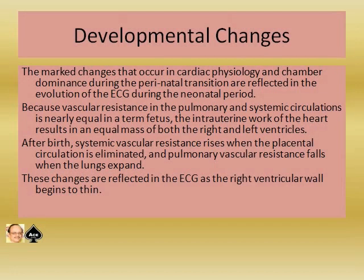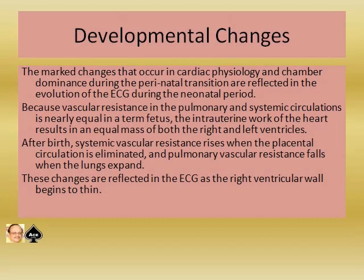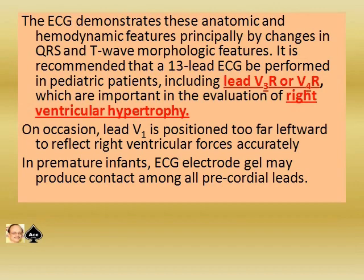Now let us come to the pediatric ECG proper — developmental changes in ECG. The marked changes that occur in cardiac physiology and chamber dominance during the perinatal transition are reflected in the evolution of the ECG during the neonatal period. Because vascular resistance in the pulmonary and systemic circulations is nearly equal in a term fetus, the intrauterine work of the heart results in equal mass of both right and left ventricles. After birth, systemic vascular resistance rises when the placental circulation is eliminated and pulmonary vascular resistance falls when the lungs expand. These changes are reflected in the ECG as the right ventricular wall begins to thin.